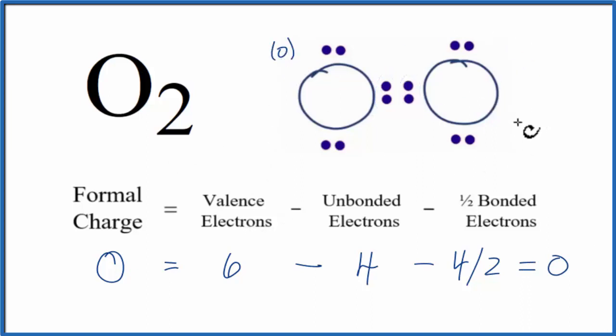This oxygen here is identical, so its formal charge is zero as well. With formal charges, we expect the more favorable or likely Lewis structure will have formal charges of zero or very close to zero. So that makes this the Lewis structure for O2.